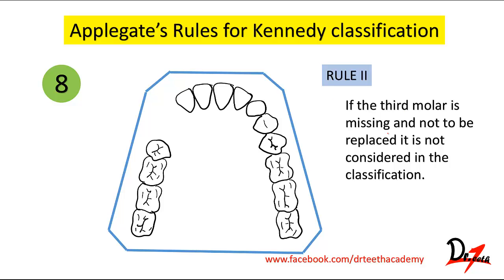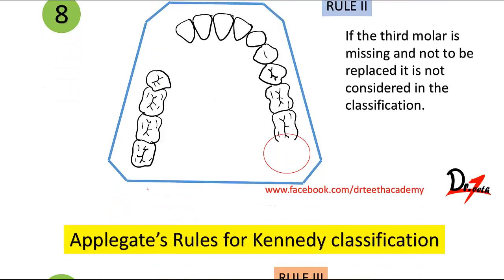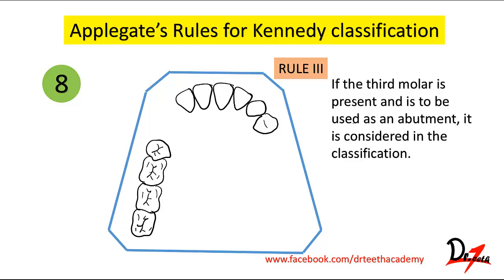Rule two: if the third molar is missing and is not to be replaced, it is not considered in the classification. Just ignore that gap and classify the remaining areas — in this example it would be Class III. Rule three: if the third molar is present and is to be used as an abutment, it is considered in the classification. If you don't consider it, a space that is Class III modification one could incorrectly become Class II.